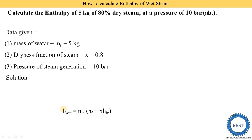The enthalpy of wet steam is found using this equation: h_wet = ms × (hf + x × hfg). I already explained this formula in a previous video on the formation of steam, covering different types of equations for different types of steams. The link is provided in the description and in the cards. We need to find the values of hf and hfg from the steam tables.